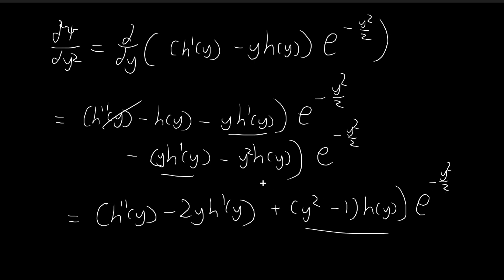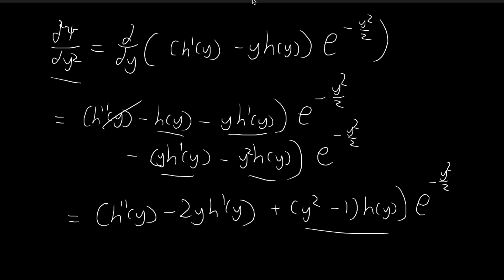Combining these brackets, we get d squared xi dy squared equal to h double prime of y, minus 2y h prime of y, plus y squared minus 1 times h of y, all multiplied by e to the power of negative y squared over 2. This is what d squared xi dy squared should be, and now we are ready to substitute this expression back into the differential equation.